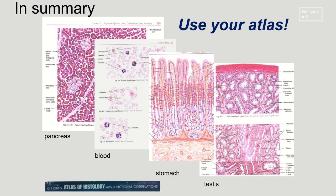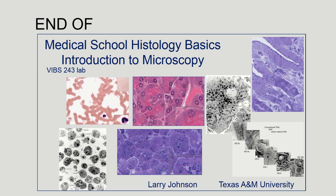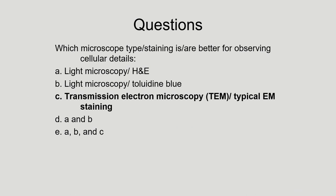In summary, make sure you're really using your atlas and looking at all of these images. As a quick review question: if you wanted a specific microscope type and stain to observe cellular details, you should have realized by now that you would want electron microscopy — specifically conventional transmission electron microscopy — because light microscopy with either H&E or toluidine blue isn't going to be as helpful for actual cellular details and what's going on within a cell. Hopefully that was helpful, and thank you guys for watching.